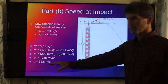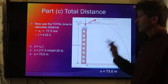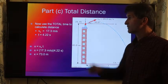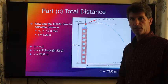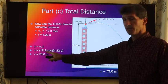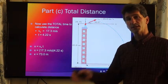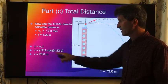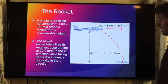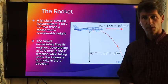So again, it hits the ground at 35.8 meters per second. The total distance that it travels will be the total time that it's in the air times the horizontal velocity — Vx times T. 17.3 meters per second, found at the very beginning of the problem. 4.22 seconds represents the time up plus the time down. It travels 73 meters in this direction. That's a very typical projectile motion problem.